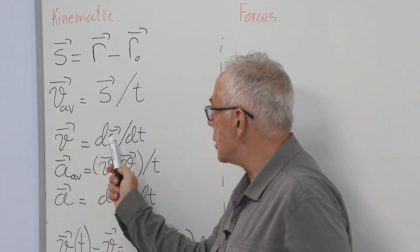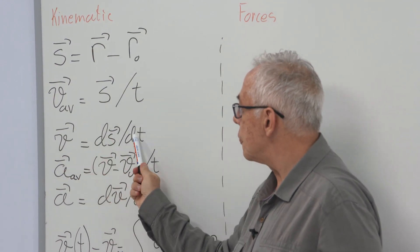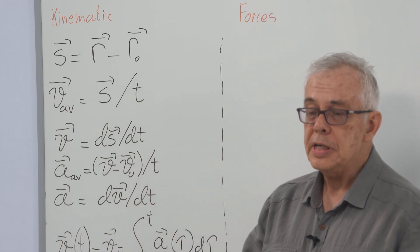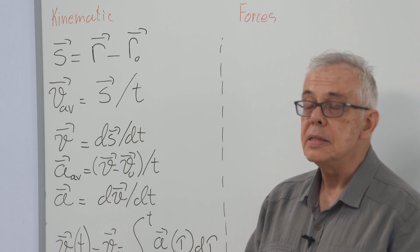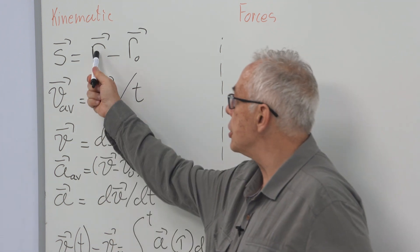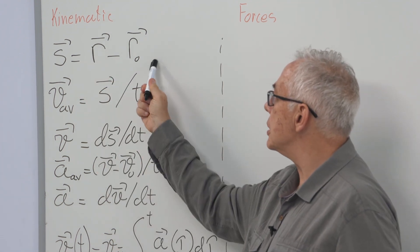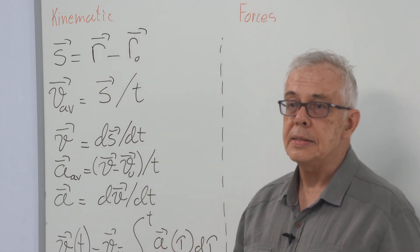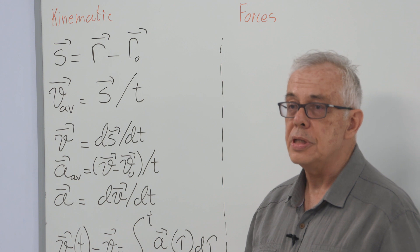Instantaneous velocity is the derivative of displacement with respect to time. And of course, it is the same as the derivative of position with respect to time, since the initial position is constant and does not contribute to the derivative.